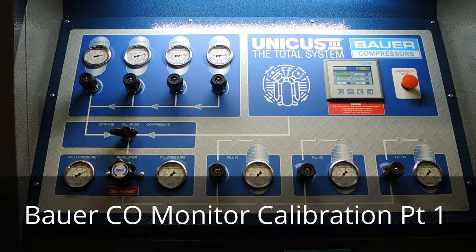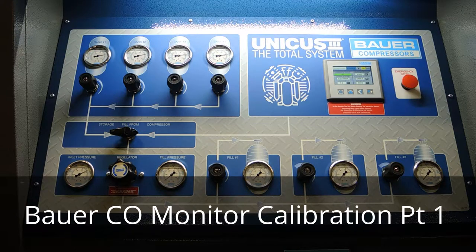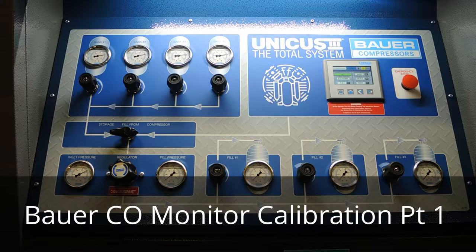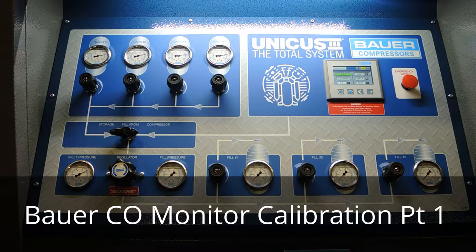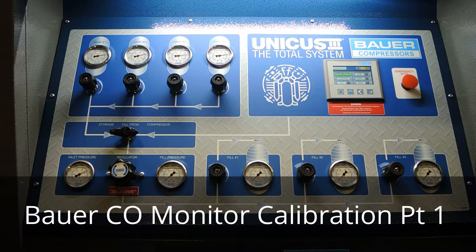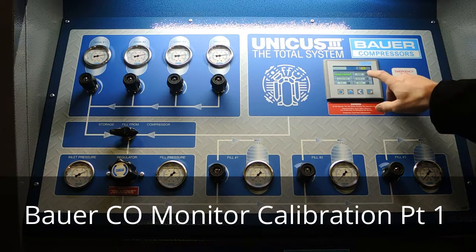I'm going to show you how to calibrate the CO monitor on the new Unicus 3 system. These are the CO monitors that Bauer's been using the last couple of years. It's got a new program that you do the calibrations through the touchscreen, through the HMI here.